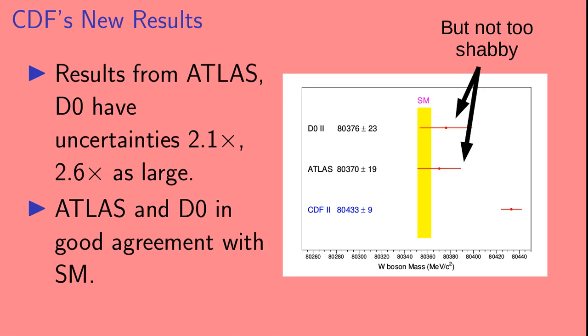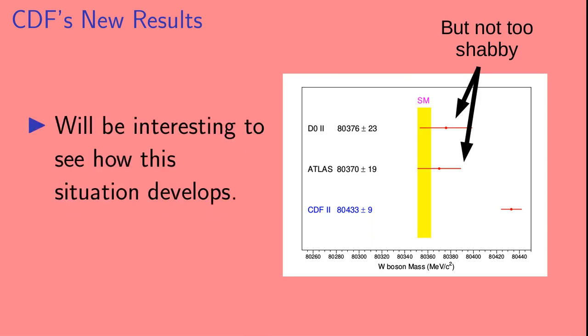But the results from ATLAS and D0 are nothing to sneeze at. They have uncertainties a little bit more than twice the size of the CDF uncertainty. But unlike the CDF result, they're both in good agreement with the standard model prediction. So it will be interesting to see how this situation develops. For more information, check out the references in the description below.